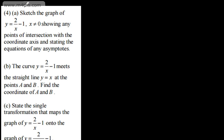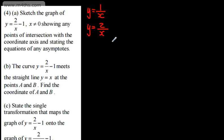In question 4, we're asked to sketch the graph of y = 2/x - 1, where x can't be equal to 0, showing any points of intersection with the coordinate axes and stating the equations of any asymptotes. Let's go back to y = 1/x — this is our standard reciprocal curve. So what we've done is start with y = 2/x, and then y = 2/x - 1.